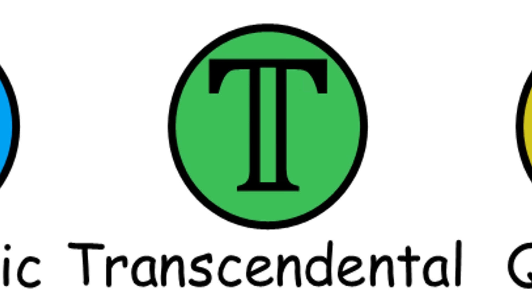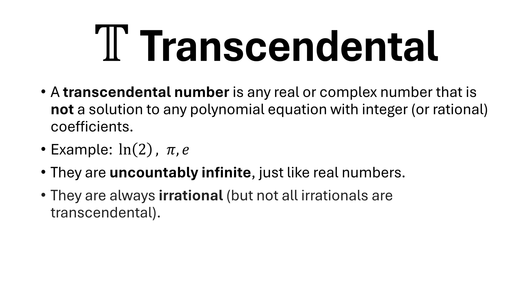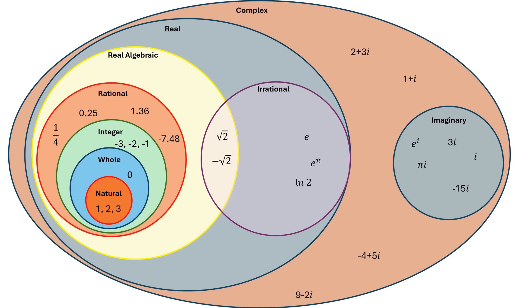A transcendental number is any real or complex number that is not a solution to any polynomial equation with integer or rational coefficients. Examples include natural log of 2, pi, and E. They are uncountably infinite, just like real numbers. They are always irrational, but not all irrationals are transcendental.